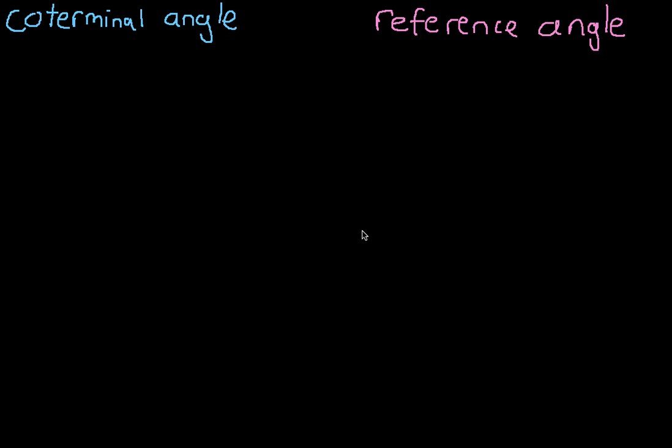Hi, this video is to help you understand how to find out what a coterminal angle is and what a reference angle is. So the definition of a coterminal angle is it's any angle that's the same as the angle that you're looking for.